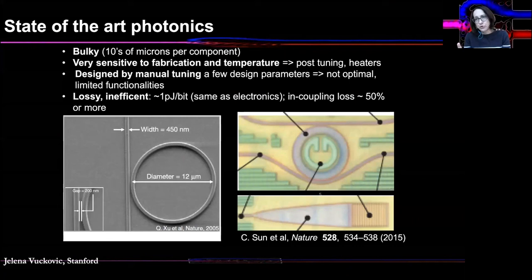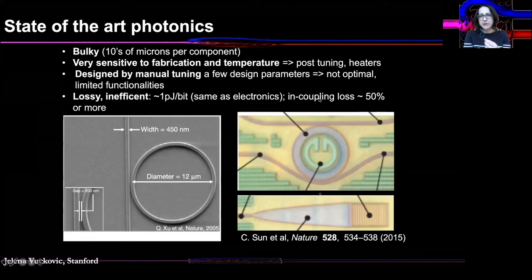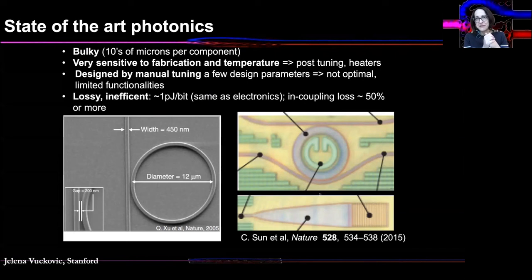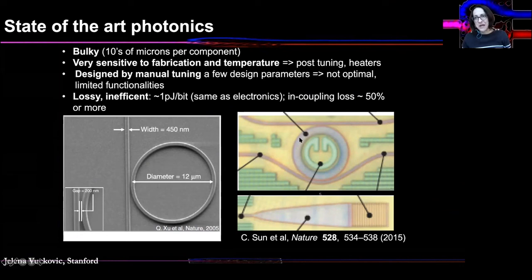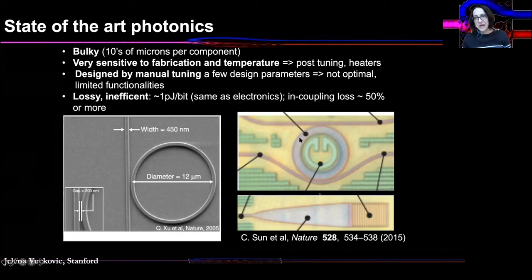This picojoule per bit is comparable to what people can already achieve with electronic systems operating at comparable speeds of 20 GHz, which kind of defeats the purpose of using photonics. This in-coupling loss of 40 to 50% — although acceptable in classical photonic systems — is completely unacceptable in quantum systems where it means losing more than 50% of your information. Even in classical systems, we know how much energy data centers consume, and saving 50% of that just by redesigning photonics would be a major impact on our environment and energy consumption.